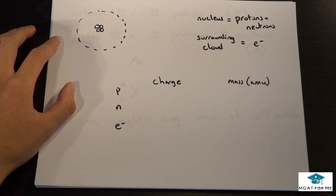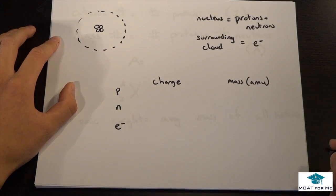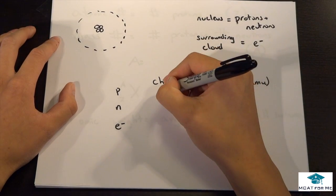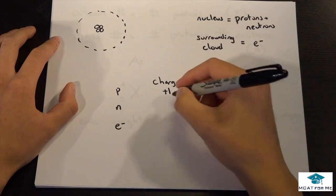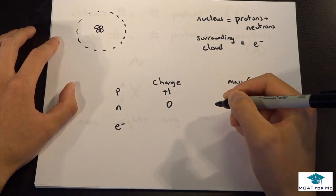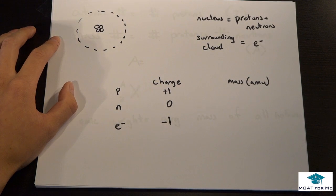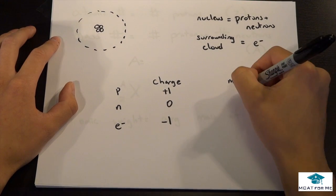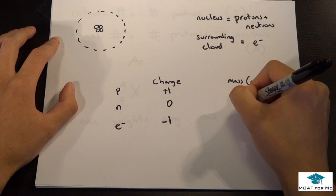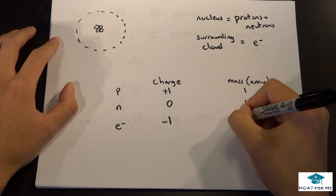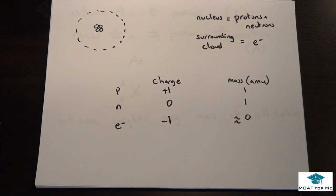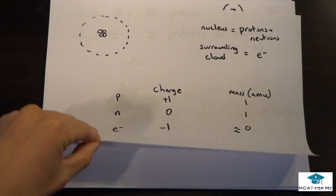We can define protons and neutrons by their charge and mass. Protons have a charge of plus 1, neutrons have a charge of 0, and electrons have a charge of negative 1. For mass, protons are 1, neutrons are also 1, and electrons are approximately 0. That's really all we need to know about how to define each of them.